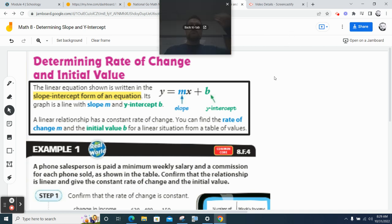The linear equation shown is written in the slope-intercept form of the equation. Its graph is a line with slope m and the y-intercept of b. A linear relationship has a constant rate of change. You will find the rate of change m and the initial value b for a linear situation from a table of values.